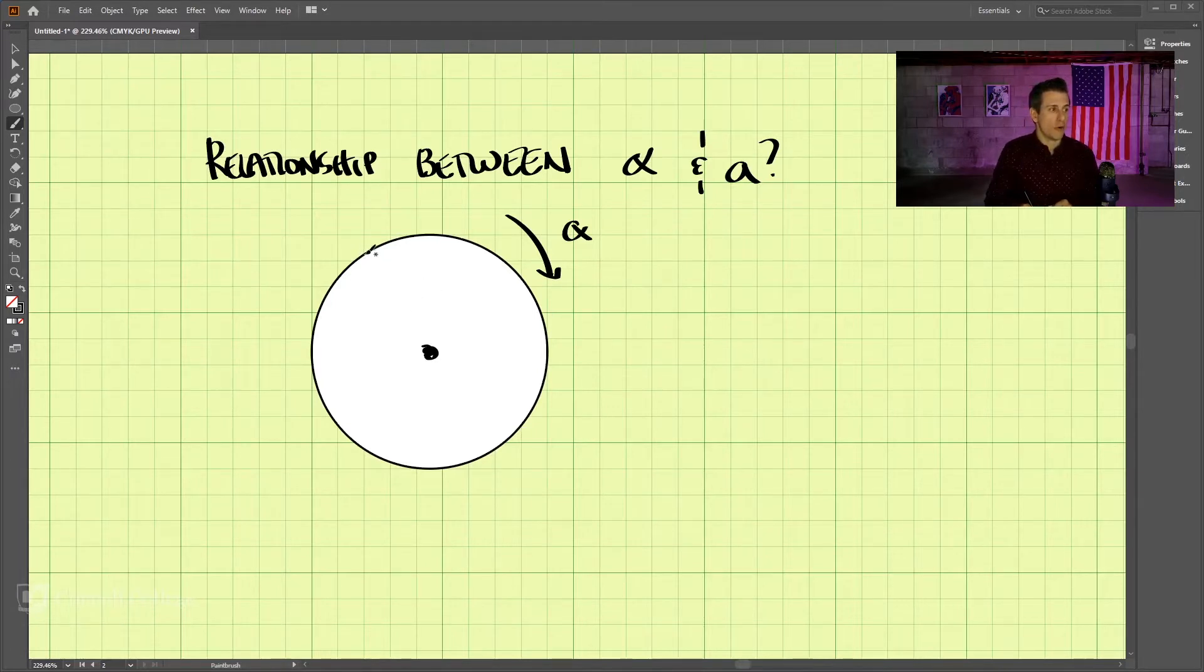If we're looking for the acceleration at a point on the outside edge of this rotating disc that has an angular acceleration alpha, which is usually written in radians per second squared, remember that there are two components to acceleration: the tangential acceleration and the normal acceleration due to the centripetal acceleration. So it's a little more in depth than just the velocity.